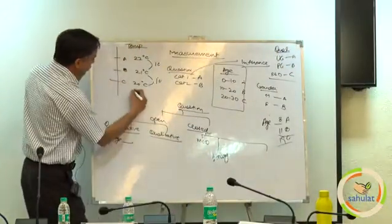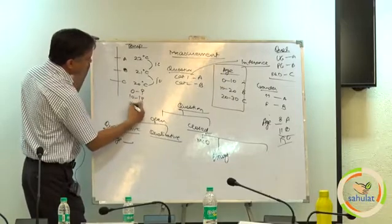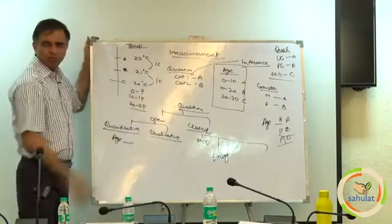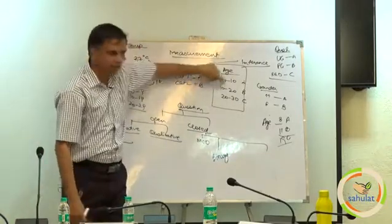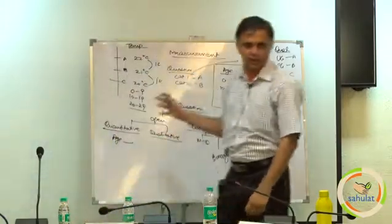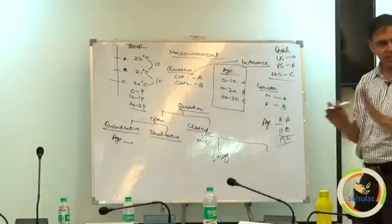So sometimes they write 0 to 9, 10 to 19, 20 to 29 and so on. This is from that 10 will be considered here, not here, otherwise it is okay. Does it make sense to you?